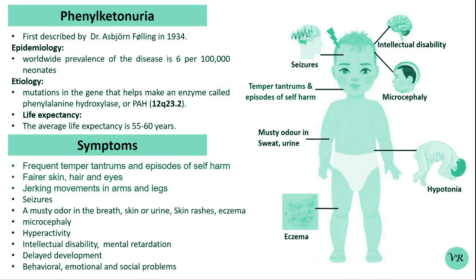Phenylketonuria was first described by Dr. Asbjørn Følling, a Norwegian physician and biochemist in 1934.